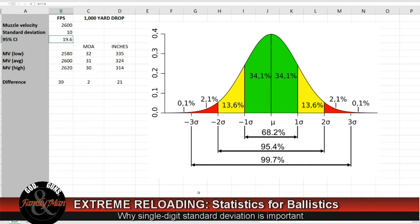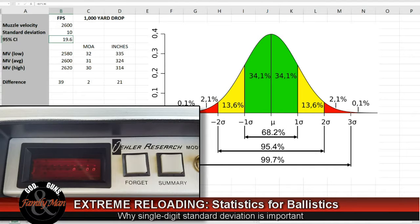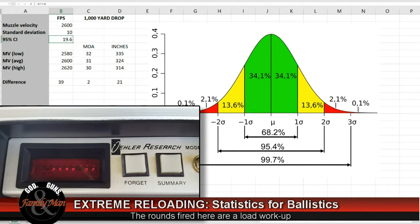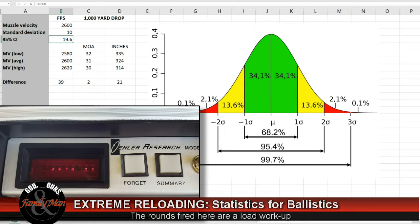Nearly every reloader probably has at their disposal a chronograph. As we know, the chronograph is going to give you a measured muzzle velocity of that bullet, and the muzzle velocity of each bullet that you're firing.